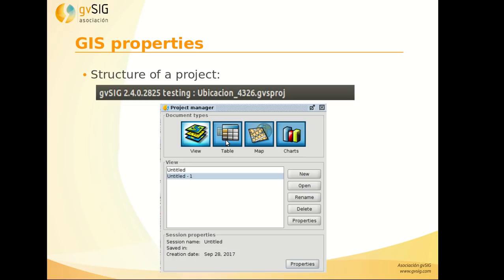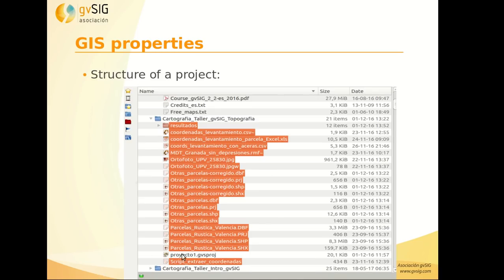The structure of a GIS project in GBC is that the project file has a specific extension and is just a text file. It contains different types of documents — views, tables, maps, or charts — but the cartography itself is not contained in the project. We only have paths to the different layers, such as shapefiles and orthophotos.